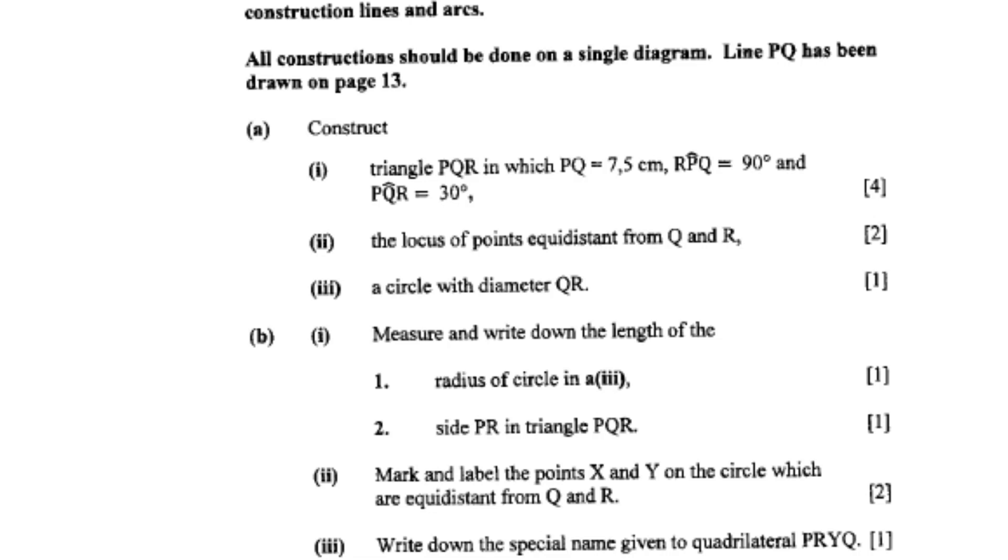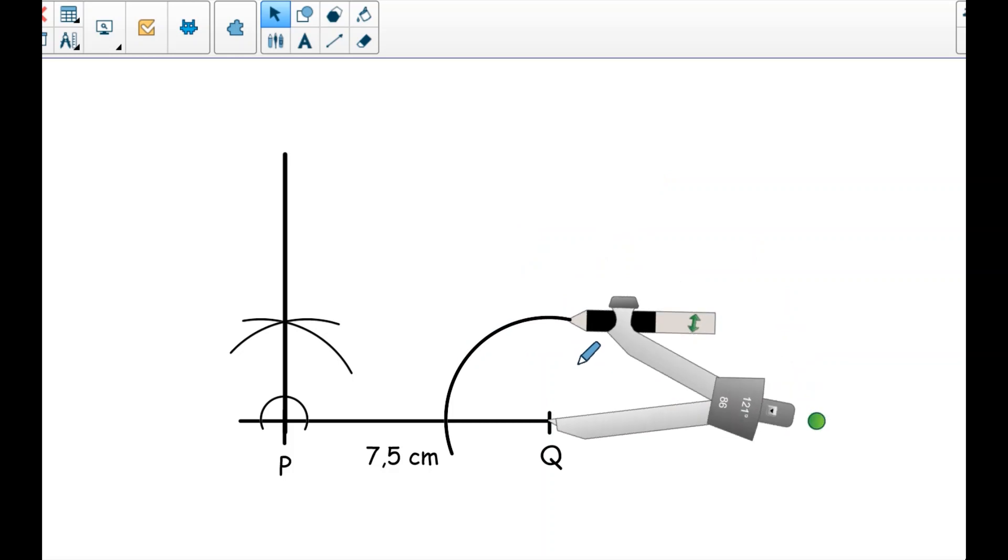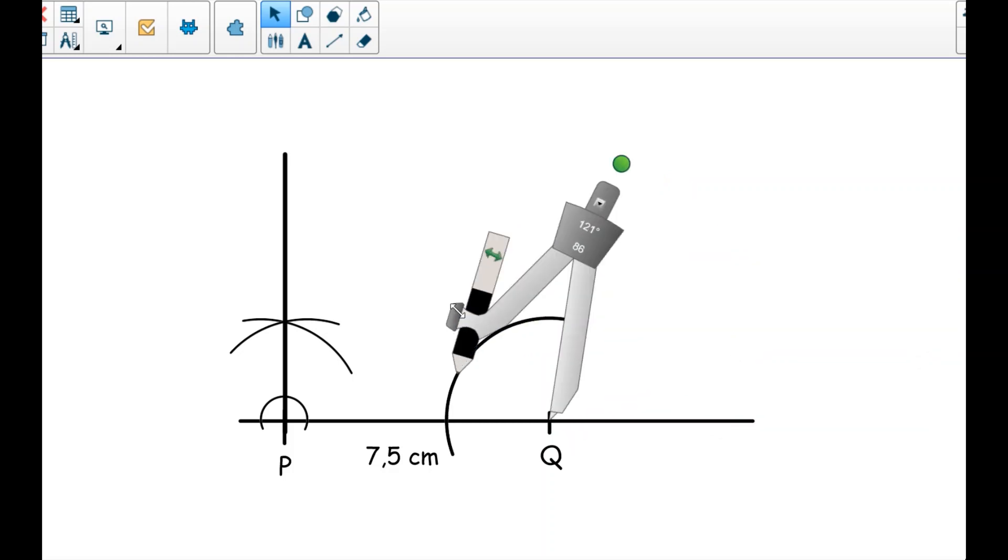In constructing 30 degrees, you first construct 60 degrees and bisect. Here I am going to demonstrate the easiest, shortest way to construct your 30 degrees. If you want to watch step-by-step video lessons, please download Fitri Access App. This is an arc for my 60 degrees.